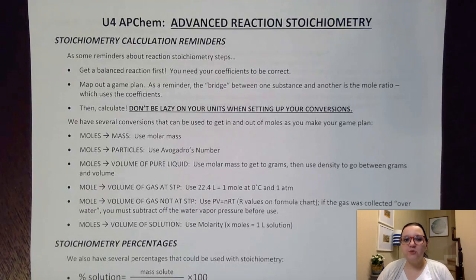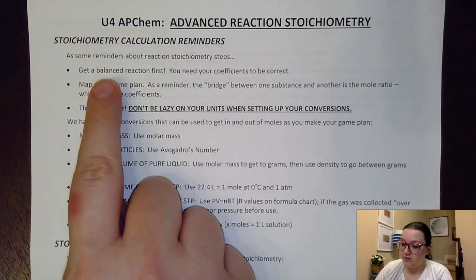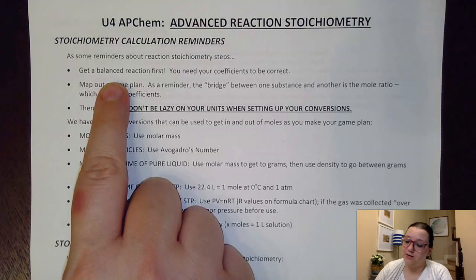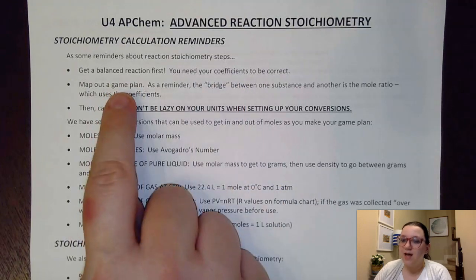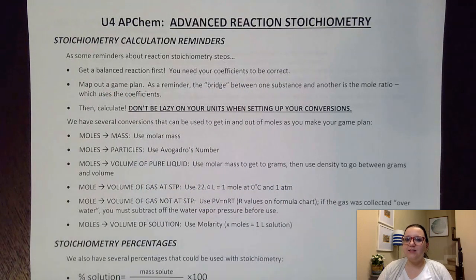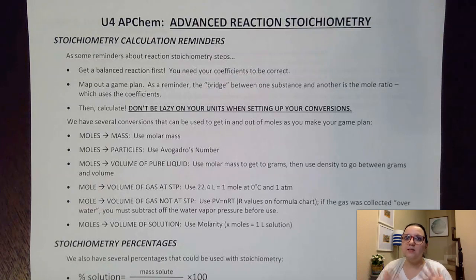In this first page we have a list of reminders about solving reaction stoichiometry problems. As far as our steps are concerned, we would first want to get ourselves a balanced reaction written. That enables us to have the coefficients ready to do our mole ratios. Next, I like to map out a game plan — I like to see where am I starting, where am I trying to get to, and plan out those conversions I would need to get between those two steps.